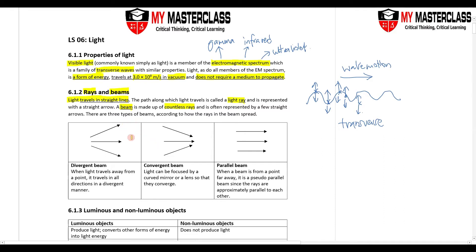There are 3 different types of beams. First, a divergent beam — as the name suggests, it diverges and spreads out. Then I have a convergent beam — it converges and gathers at a point, all being focused. And then I have a parallel beam, where the rays are parallel to each other.